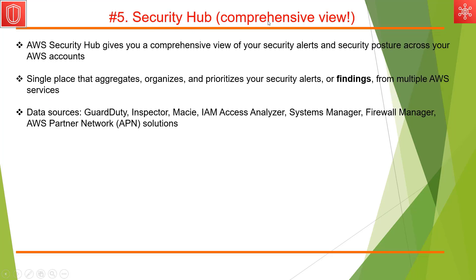Security Hub offers a comprehensive view. It's a single place that aggregates, organizes, and prioritizes your security alerts and findings from multiple AWS services. It takes inputs from GuardDuty, Inspector, Macie, IAM Access Analyzer, Systems Manager, Firewall Manager, and even AWS Partner Network solutions.